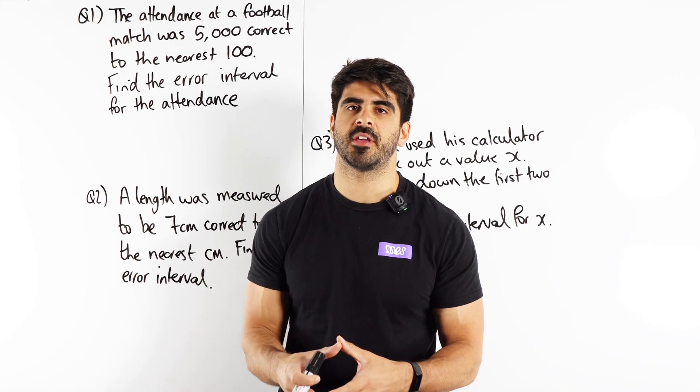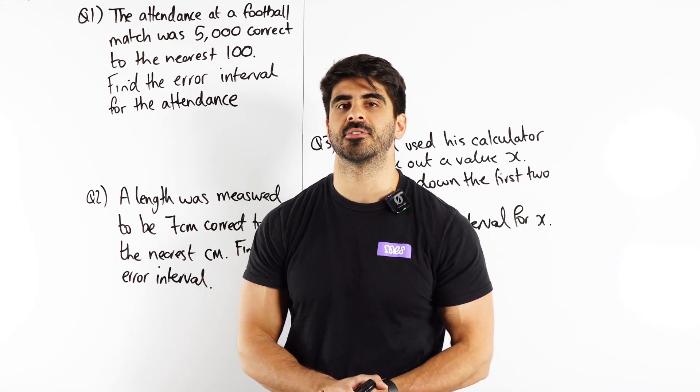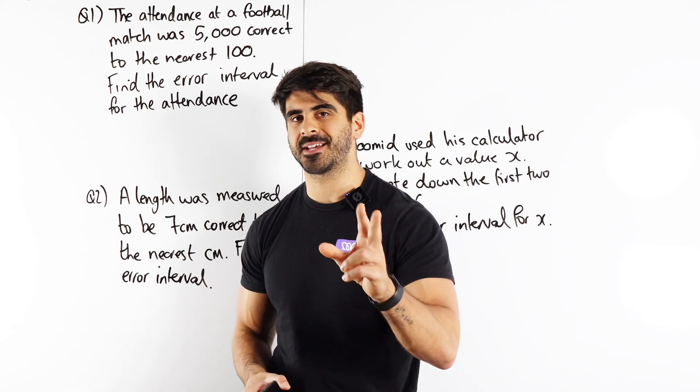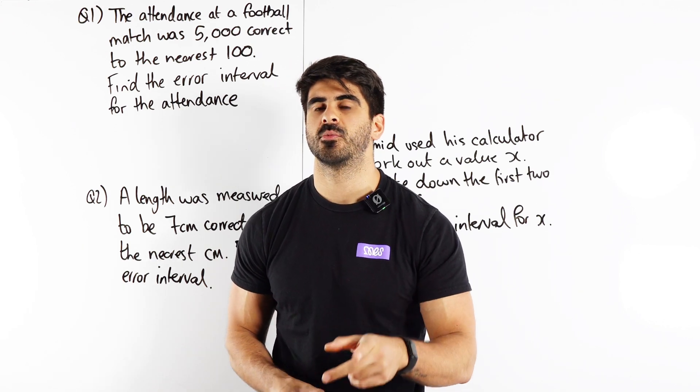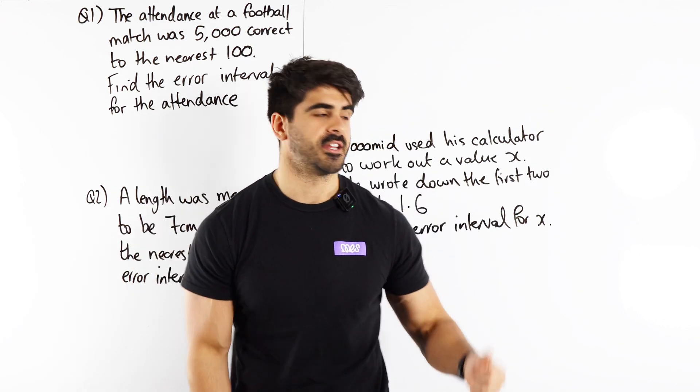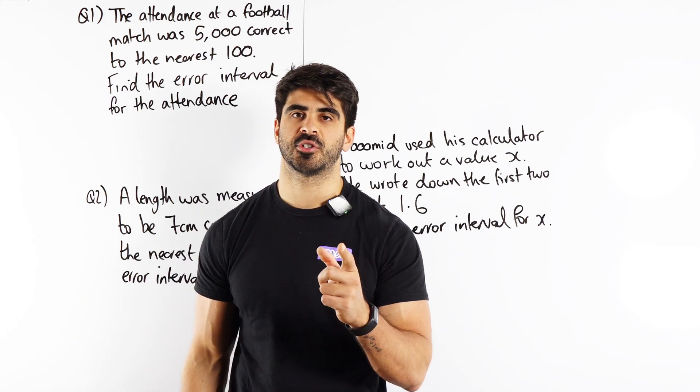Error intervals. What are they and how do we calculate them super quickly? There's two main types of error intervals we need to look at which is just general rounding and a special one which I'll do at the end.